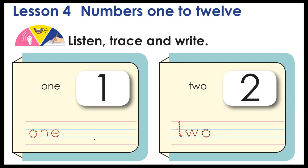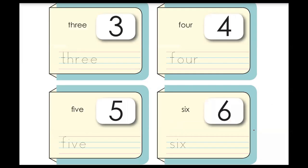Now you're going to listen, trace, and write. One — O-N-E, one. Two — T-W-O, two. Perfect. Next, three — how are we going to write three? How do we spell three? T-H-R-E-E, three. Can you write three?